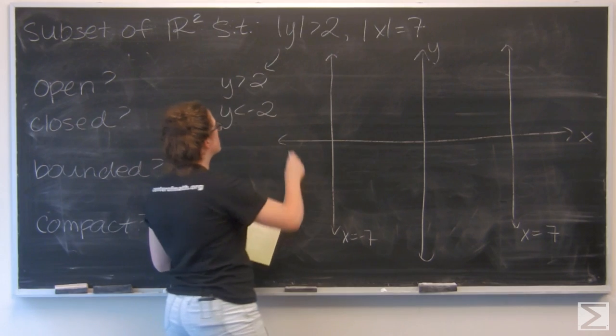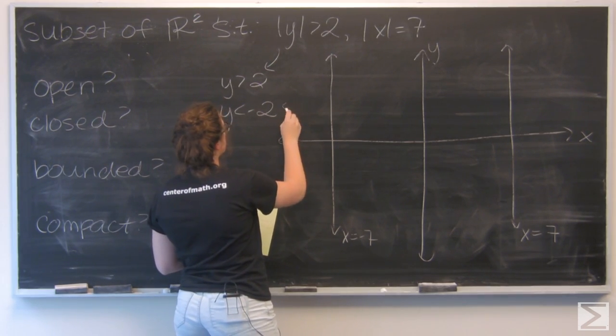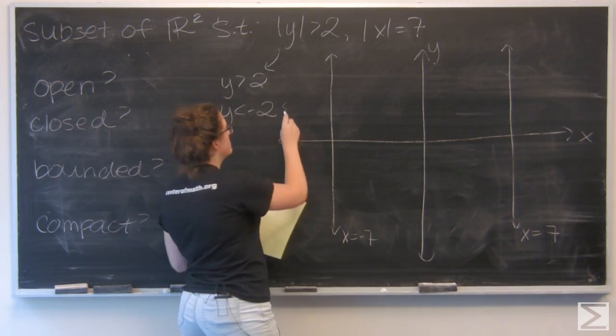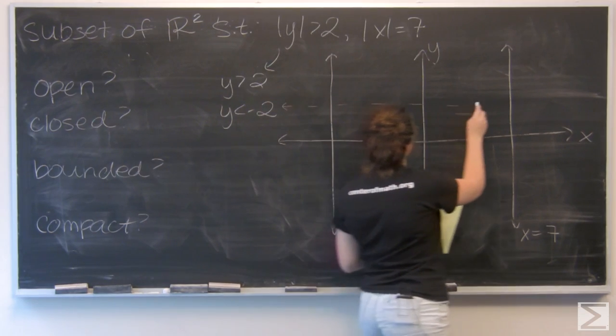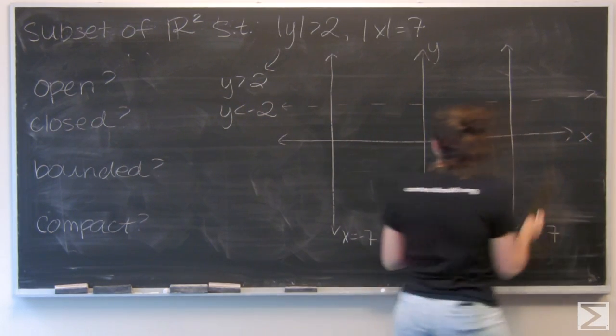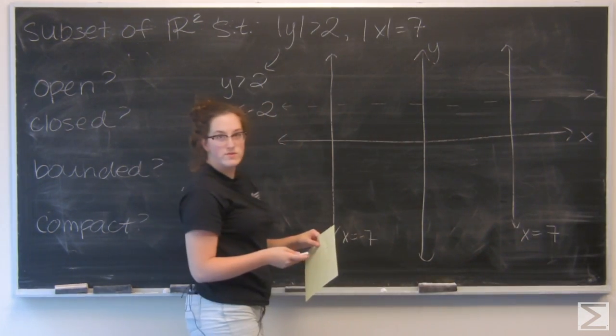I'm going to use dashed lines to identify that. So here's the line y equals positive 2, and then the line y equals negative 2.